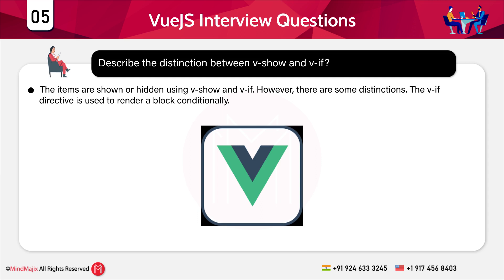The v-show directive can also render a block conditionally. However, the element is always rendered by v-show — instead of removing the element from the DOM, it simply sets the CSS display property. It has a high initial rendering cost but a low toggle cost. Use the v-show directive if you need to toggle frequently.